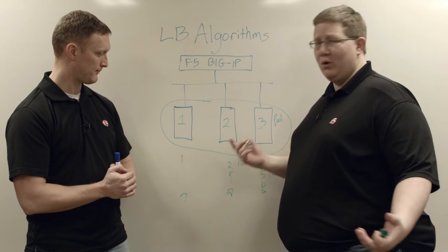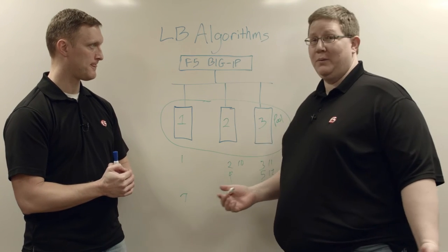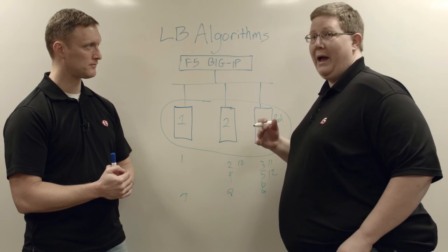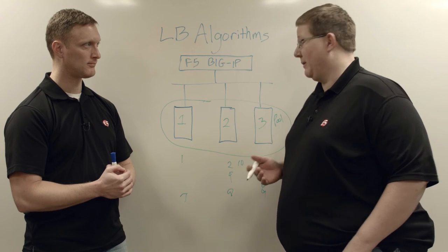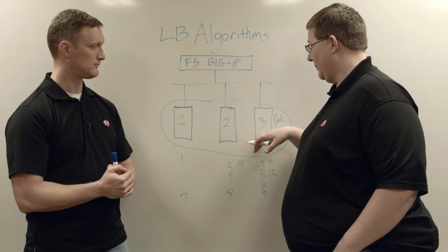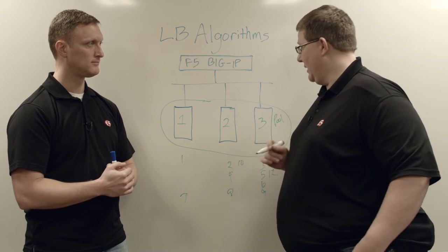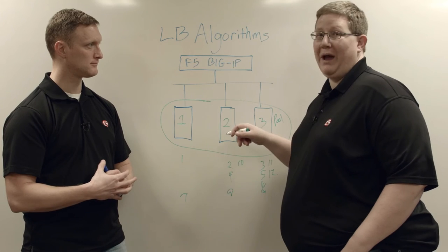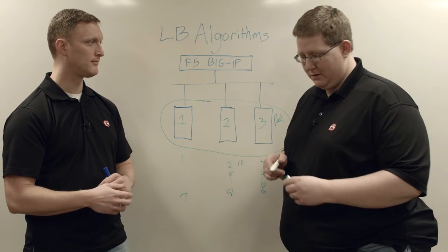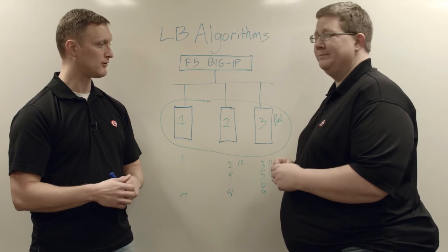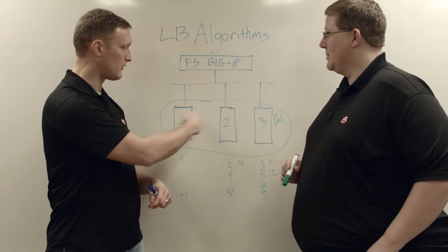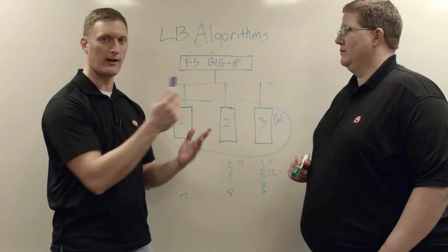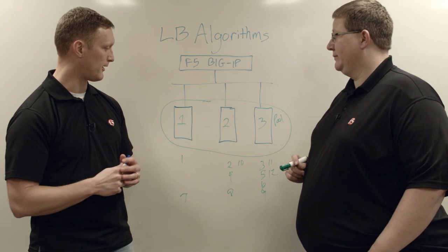And so ratio is not super complex, but gives you the ability to differentiate either your compute power, or how many services you're running on those applications. You may have this application, whereas it's running in the same pool, does other backend processes that these two don't have to handle. And so that's a use case for ratio. And one other note, you can obviously set the ratio to whatever weights you want them to be. They don't have to be one, two, three, they could be two, two, four, two, two, five, whatever. And then the traffic gets balanced accordingly.